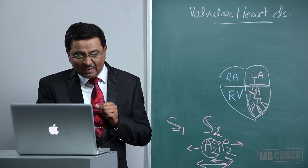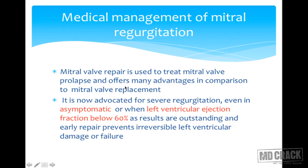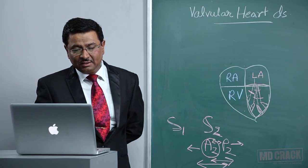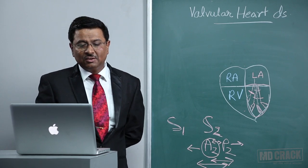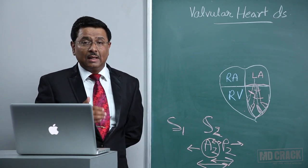Mitral valve repair is used to treat mitral valve prolapse and offers many advantages over replacement. It is now advocated for severe regurgitation even if the patient is asymptomatic, or when the left ventricular ejection fraction falls below 60%. In MCQs, if a patient is asymptomatic but the ejection fraction is 45%, you should still choose the surgical option. Early repair prevents irreversible left ventricular damage or failure.